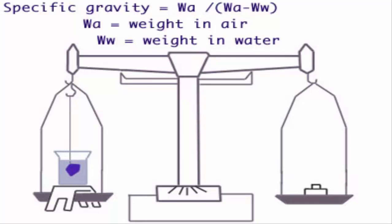Specific gravity is the ratio of the density of a substance to the density of a reference substance. Equivalently, it is the ratio of the mass of a substance to the mass of a reference substance for the same given volume.